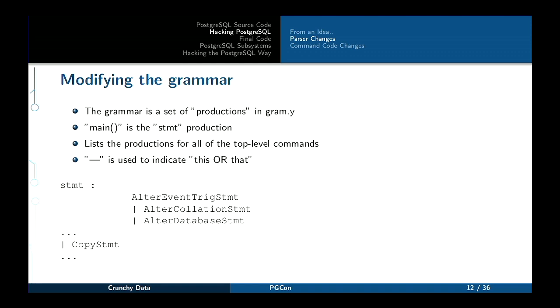When modifying the grammar — which is built using Bison — you have a set of productions. The first production is the statement production, kind of like main for a C program. From that you have a list of all the different top-level commands, then a pipe which says 'this or that.' So we have stmt, and then things like alter_event_trigger_stmt, alter_collation_stmt, alter_database_stmt, and so on. This tends to be listed in alphabetical order, although ordering shouldn't matter. Please do ask questions as I go — I'm going through this at a pretty rapid pace.